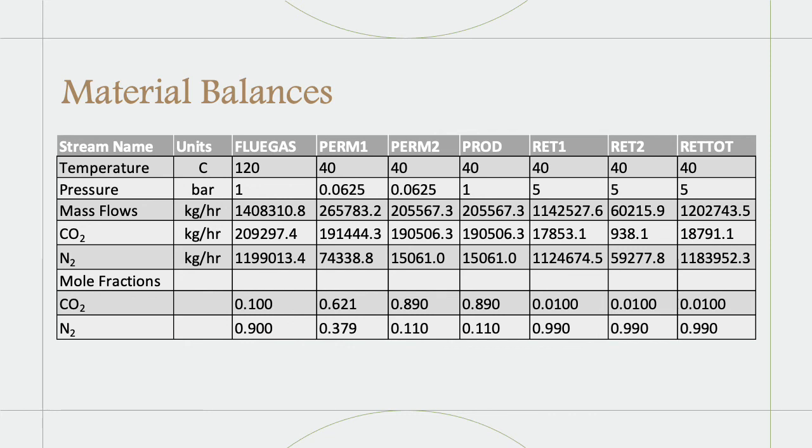The flue gas starts hot, but is consistently cooled to 40 Celsius so as to not damage the membranes. The pressure is high for the retentate streams and low for the permeate streams in order to maintain a large pressure difference. The flow rates involved here are also very high. The flow rate of the incoming flue gas is 1.4 million kilograms per hour, and the amount of CO2 in the product stream is 190,000 kilograms per hour.